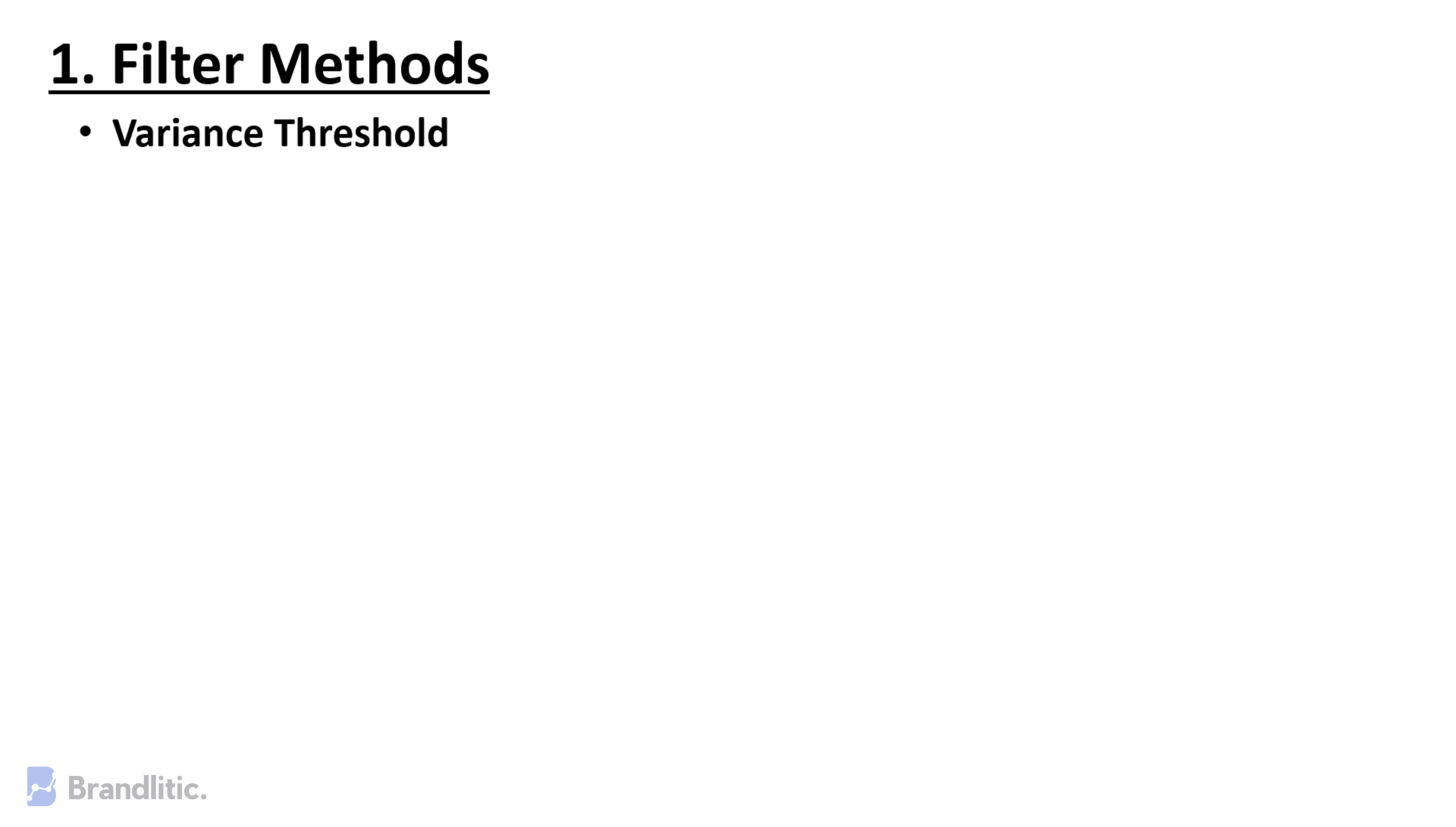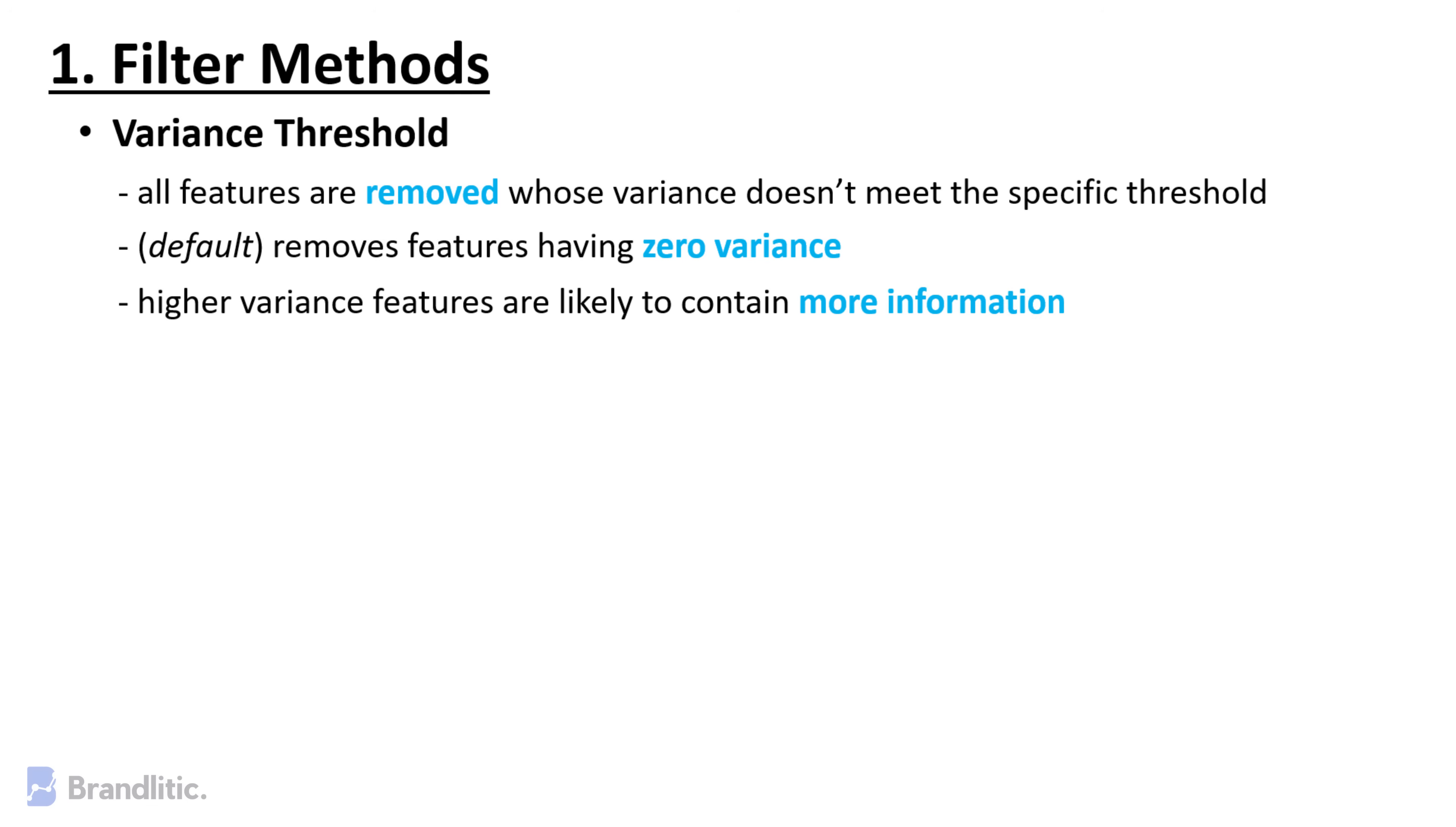Variance Threshold. It is an approach where all features are removed whose variance doesn't meet the specific threshold. By default, this method removes the features having zero variance. The assumption made when using this method is that the higher variance features are likely to contain more information.